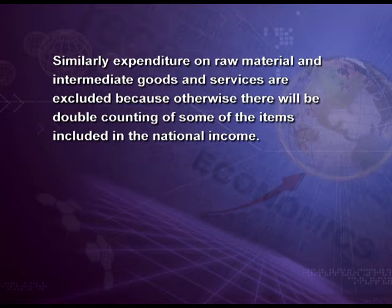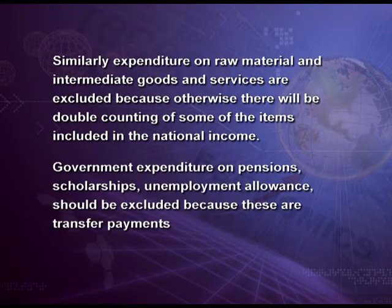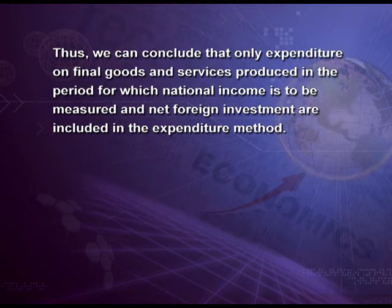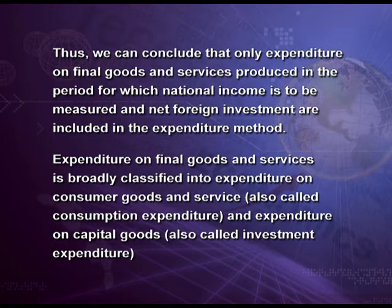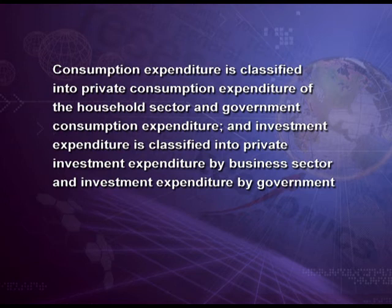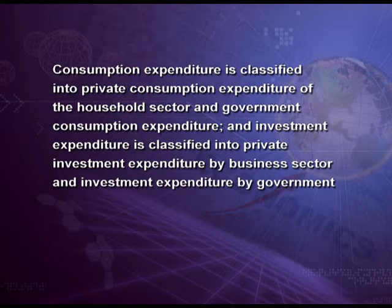This difference is also called net foreign investment. Goods produced in a preceding year are excluded from national income because they have been accounted for in the national incomes of the periods when they were produced. Similarly, expenditure on raw materials and intermediate goods and services are excluded to avoid double counting. Government expenditure on pensions, scholarships, unemployment allowance, etc. should be excluded because these are transfer payments, not factor payments. Thus, only expenditure on final goods and services produced in the current period and net foreign investment are included in the expenditure method. Expenditure on final goods and services is broadly classified into consumption expenditure and investment expenditure, each further divided into private and government components.